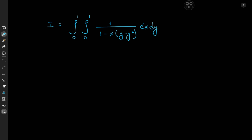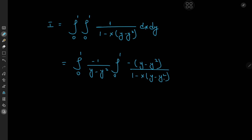So what exactly should be our line of attack? Well, we're integrating with respect to x first, meaning that we're holding y constant, so we might as well expand using this factor of y minus y squared. And what exactly is the utility of that? That will become clear in a moment. We have a function of x in the denominator and its derivative in the numerator, so that means we have a logarithm.